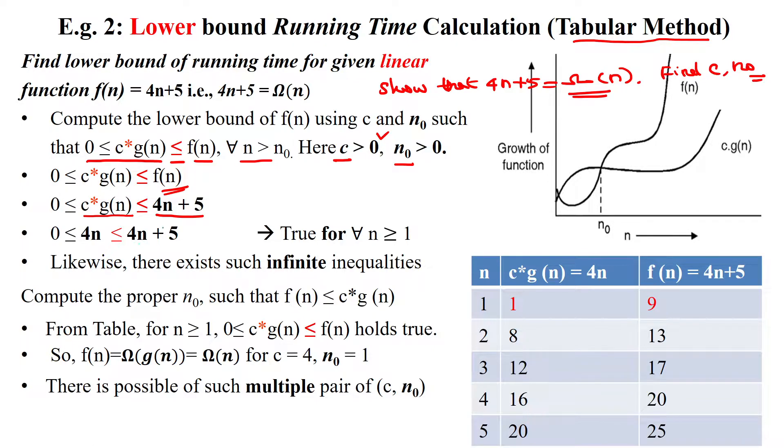For the dominating term is 4n, then the constant is 5. We are ignoring the constant value when comparing with the dominating term n with degree 1.